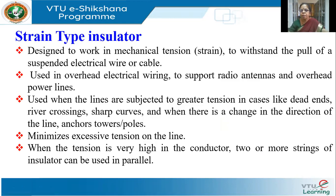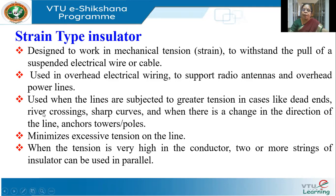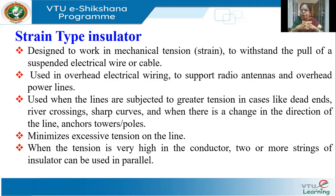Next, we have strain type insulators. These are similar to suspension type, except they are mounted horizontally to withstand the pull of a suspended electrical wire or cable. They provide horizontal support to hold the wires. They are used to either support radio antennas or overhead power lines, and also where the wire or line is subjected to great tension — for example, at a dead end or when there is a sharp bend. They have discs but are mounted horizontally.